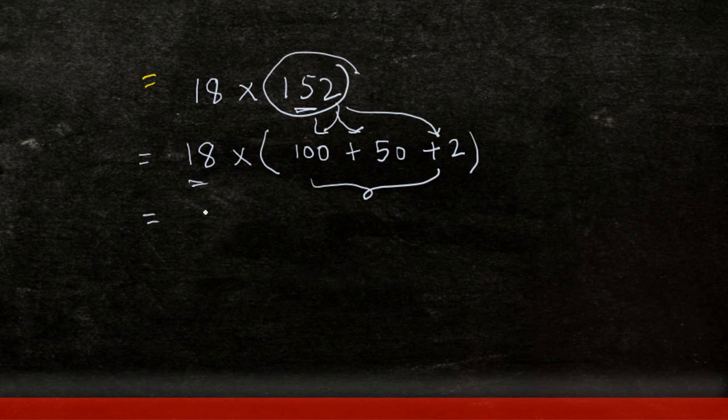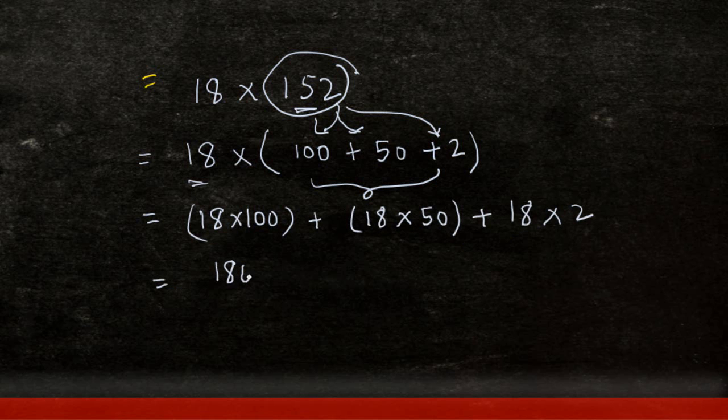And when I distribute this 18 over the 3 numbers, I get 18 times 100, plus 18 times 50, plus 18 times 2. This gives you 1800, plus 18 times 50, so 50, 0, 0, 18 times 5, 90, 900, plus 36.